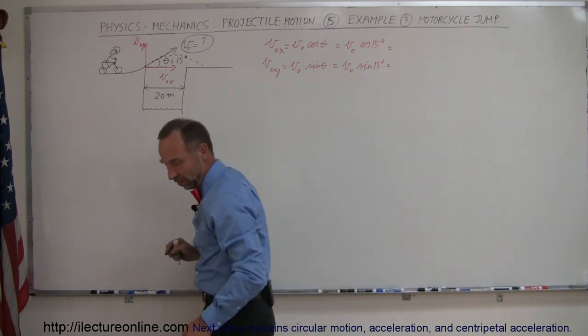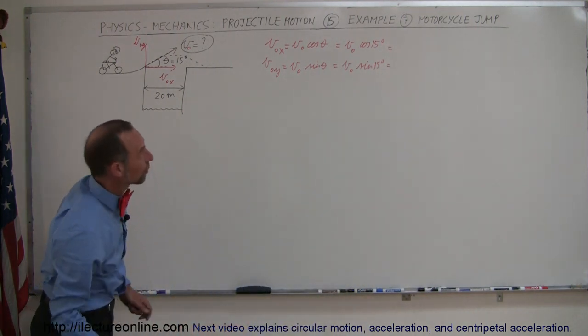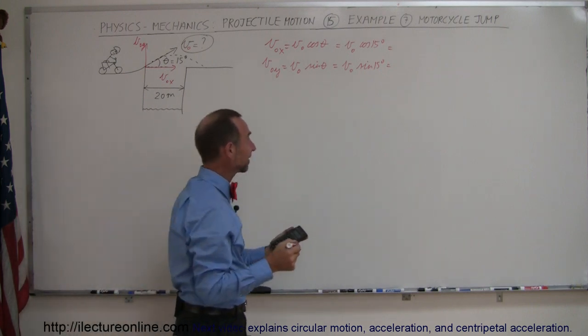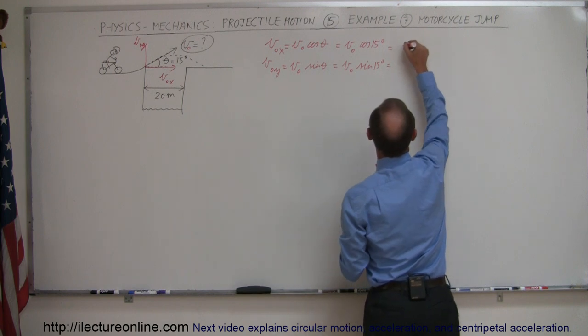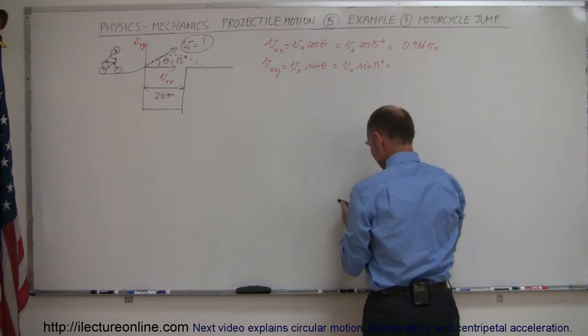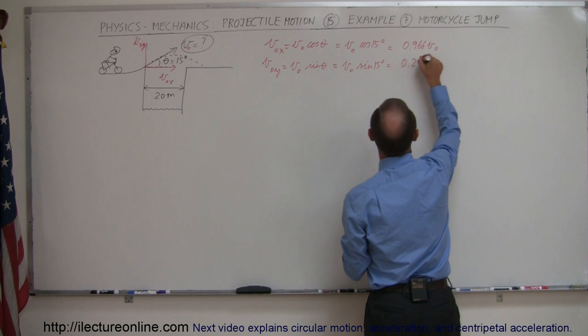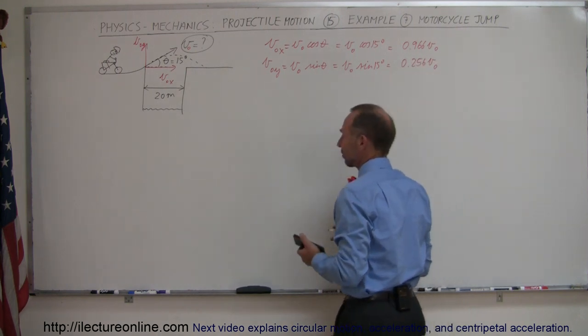Let's find out what those numbers are because we're going to need them in our further calculations. So 15 take the cosine that's 0.966. So it's equal to 0.966 times the initial velocity and that's a sine we get 15 sine that's 0.256, 0.256 times the initial velocity for the y direction.